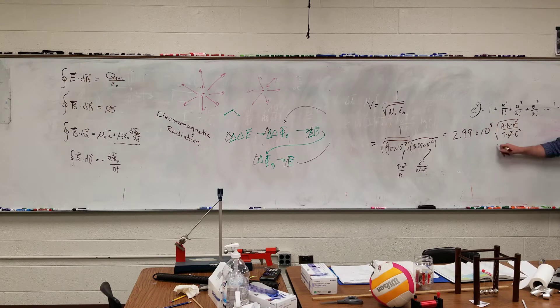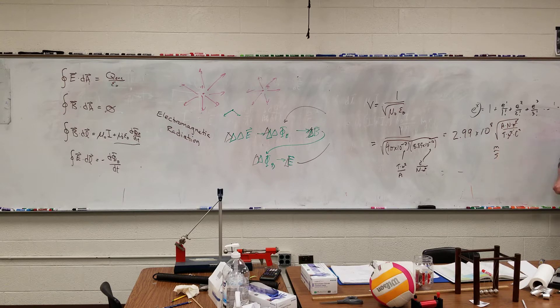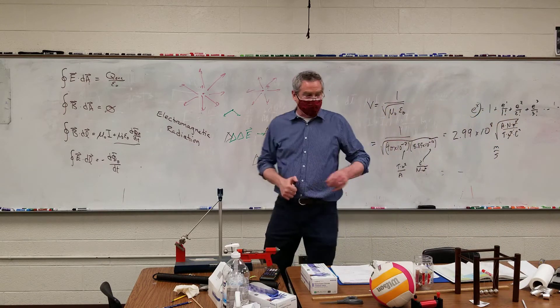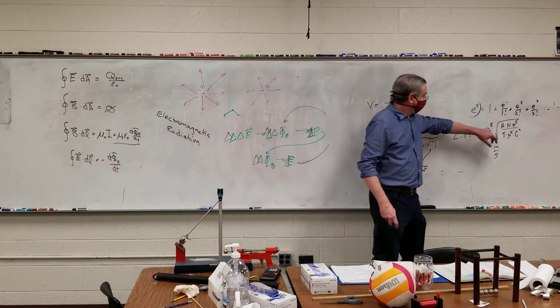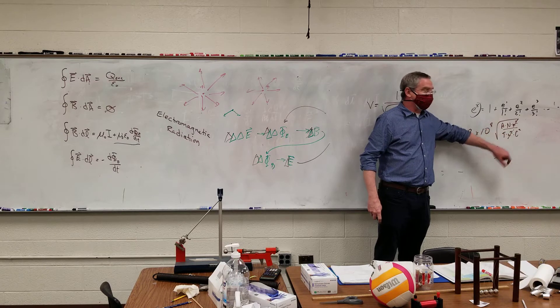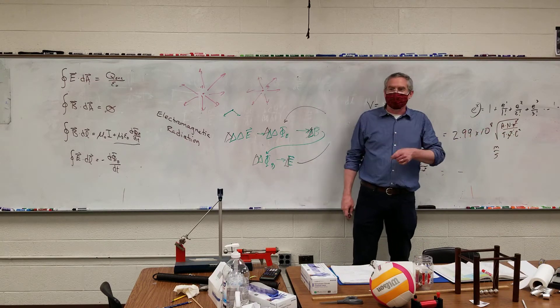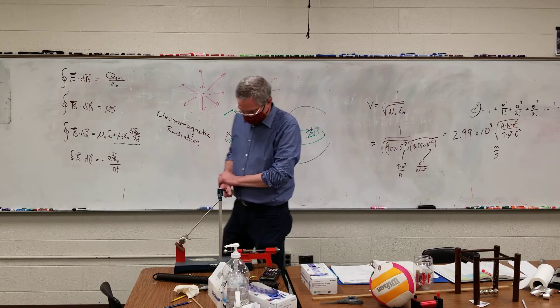Yeah, it's speed. Got it. Although the square root of ampere-newtons per tesla coulomb squared is a legitimate unit of speed. However, it's not the one that people usually use.